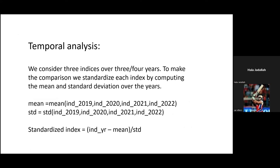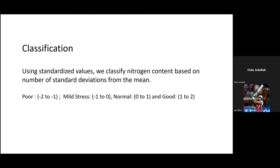For the temporal analysis, we took the mean and standard deviation of five years for each pixel. We then calculated a z-score: a particular year's value minus the long-term mean, divided by the long-term standard deviation. This ranges from minus 3 to plus 3, where a negative value indicates negative stress. We categorized results into four classes: poor (below minus 2), mild stress (minus 2 to minus 1), normal (minus 1 to 0), and good (0 to 1 and above).